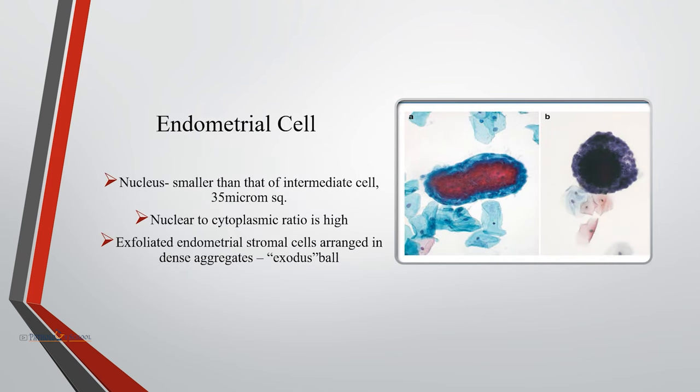Endometrial cells have a nucleus smaller than that of intermediate cells, with a nuclear cross-sectional area of 35 micrometers squared, and a high nuclear-to-cytoplasmic ratio. Exfoliated endometrial stromal cells, when arranged in dense aggregates surrounded by glandular epithelium, form a characteristic appearance known as an exodus ball, seen during the end of menstrual flow.